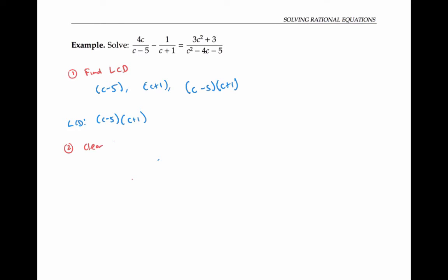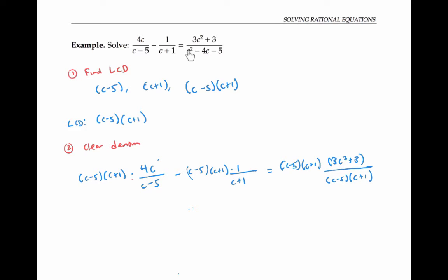The next step is to clear the denominators by multiplying both sides of the equation by my least common denominator. In fact, I can just multiply each of the three terms by this least common denominator. I went ahead and wrote my third denominator in factored form to make it easier to see what cancels. Now canceling: this dies, this dies, and both of those factors die. Canceling out the denominators is the whole point — you're multiplying by something big enough to kill every single denominator so you don't have to deal with denominators anymore.